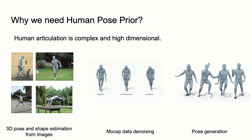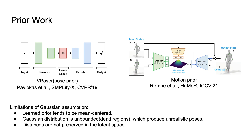Data-driven priors are used to overcome such issues. Previous work for human pose priors are VAE-based and have Gaussian assumptions over the latent space, such as VPoser and HUMOR. The Gaussian assumption in these methods has three major limitations: they tend to produce poses near the mean of the computed Gaussian, the learned distribution is unbounded with dead regions producing unrealistic poses, and distances between individual human poses are not preserved in the latent space.